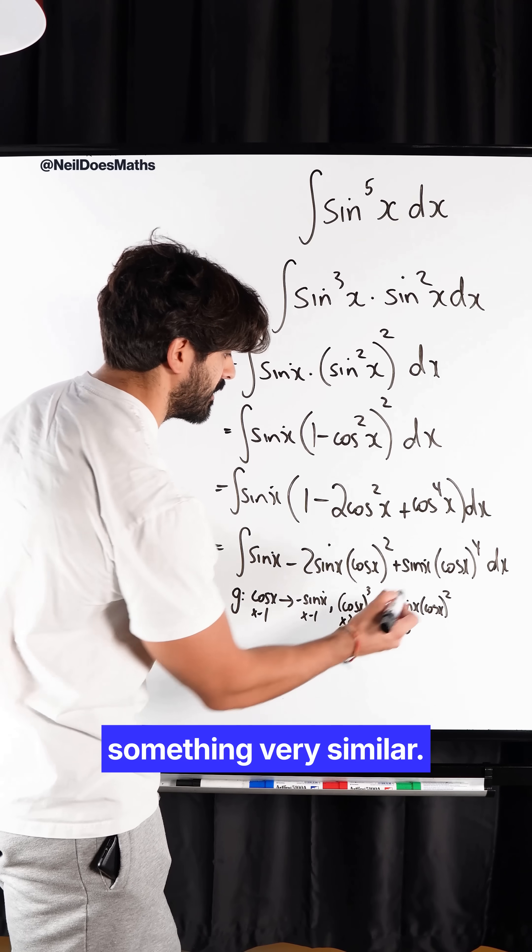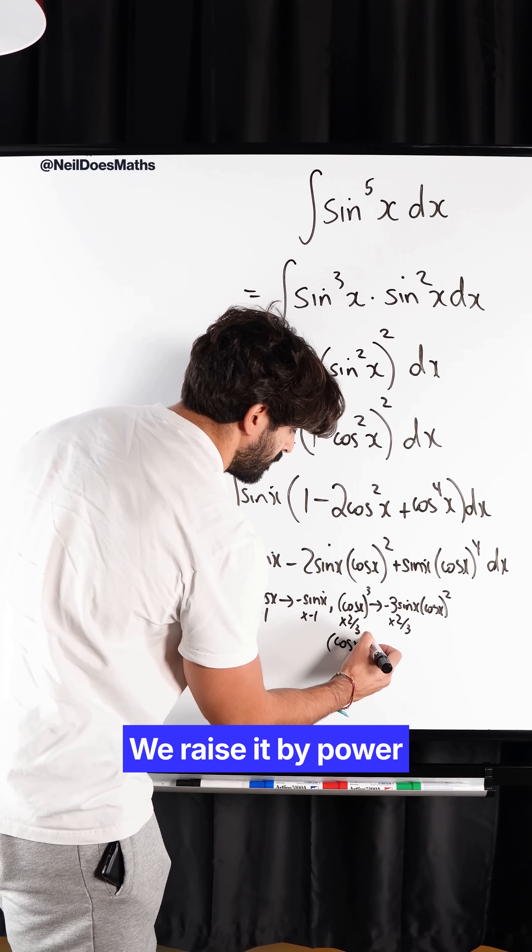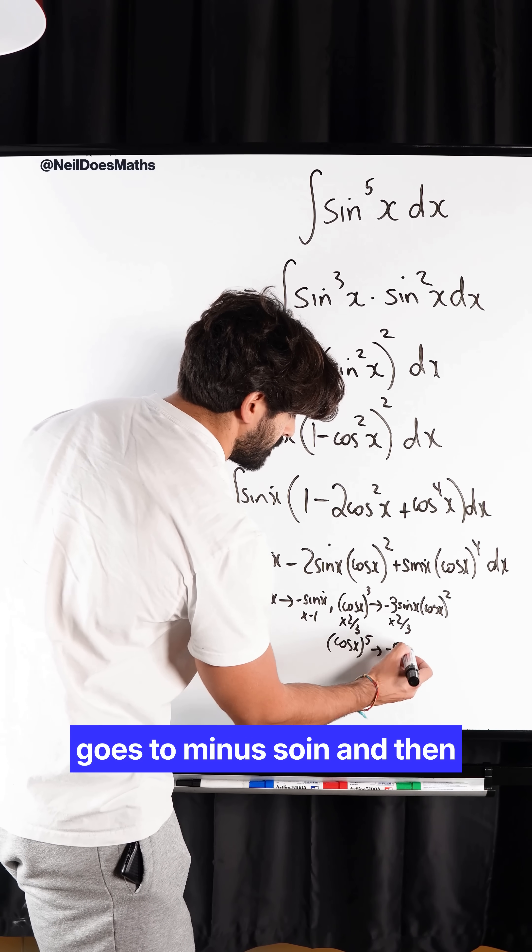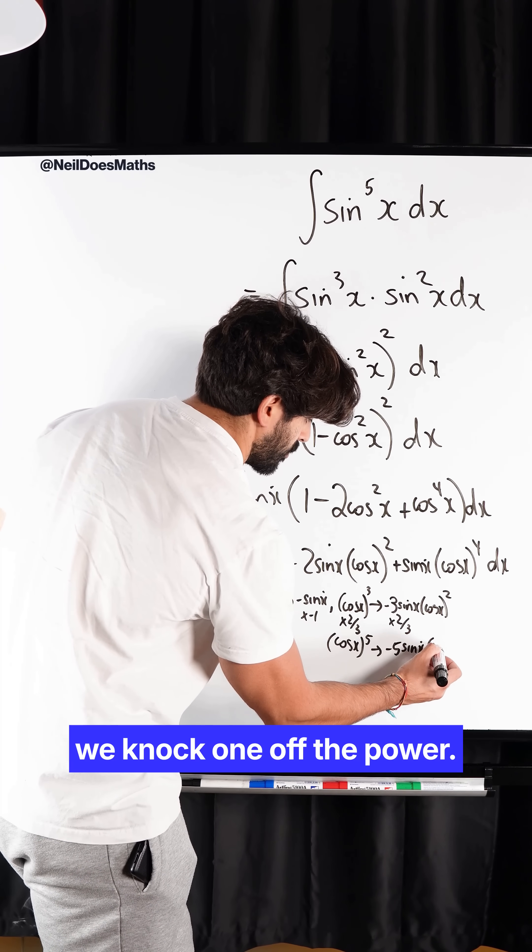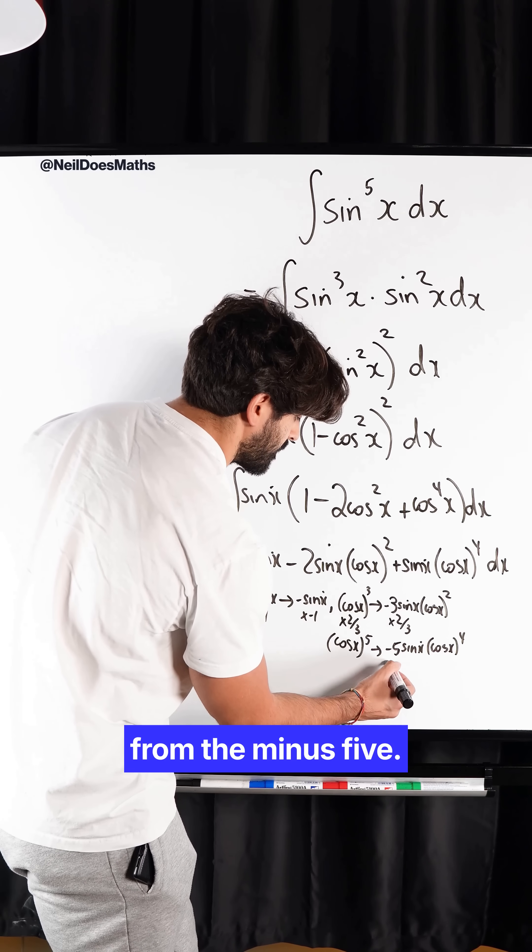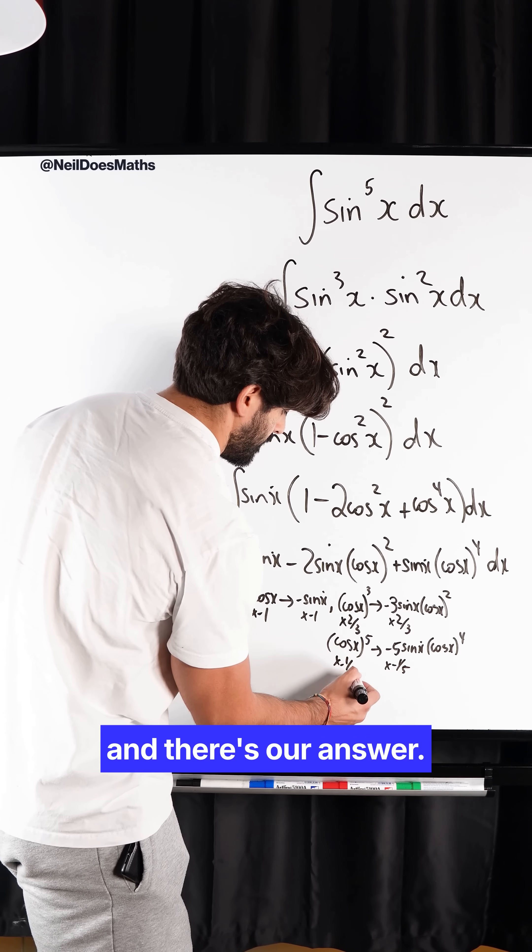And finally here, we have something very similar. I have cos x to the power 5. It's a power function. We raise it by power 1. Differentiate. We bring down the 5. Cos goes to minus sin. And then we knock one off the power. We can see that's basically the exact same apart from the minus 5. So we times by minus a fifth to get rid of the minus 5. And there's our answer.